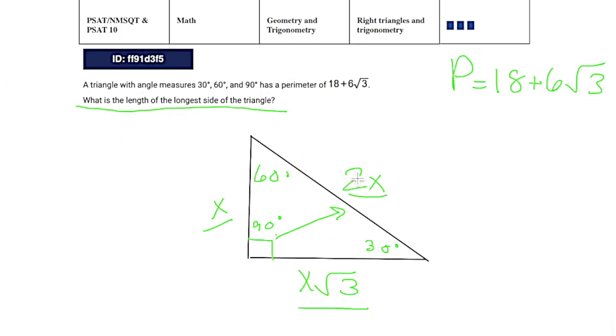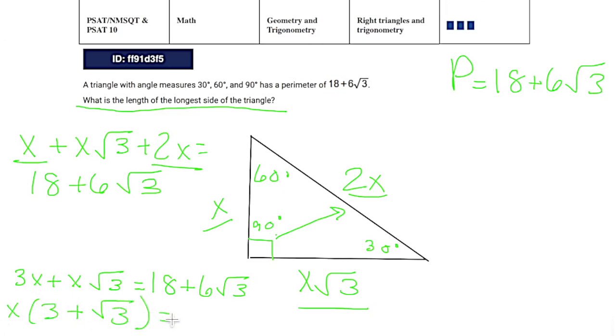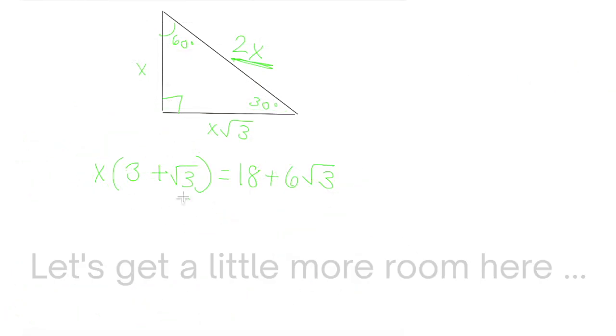So x plus x root 3 plus 2x equals 18 plus 6 root 3. Now I already see that x and 2x can combine. So we have 3x plus x root 3 equals 18 plus 6 root 3. So excitingly enough, I can pull an x out of this. So x times 3 plus root 3 equals 18 plus 6 times root 3. So now my left side has an x pulled out of it with 3 plus root 3 getting multiplied. So if we can figure out a way to get this same setup of a number multiplying into 3 plus root 3 on the right side, we'd be in really good shape.